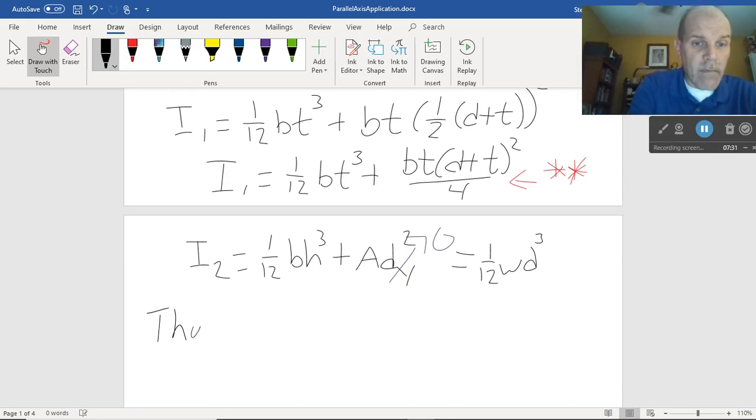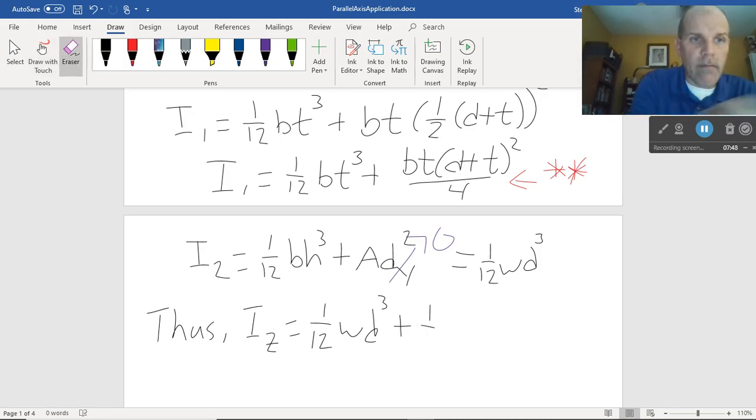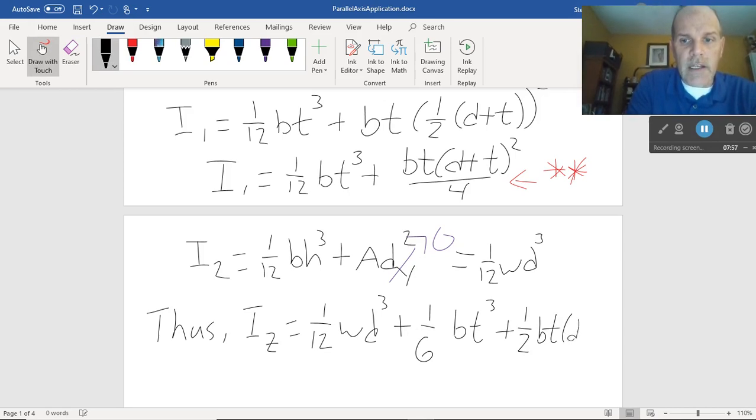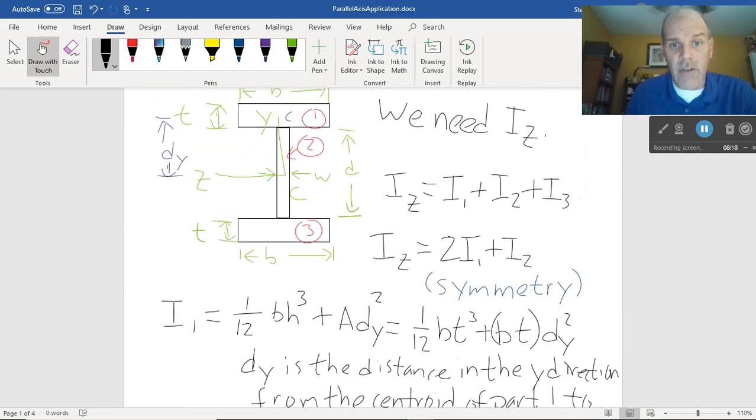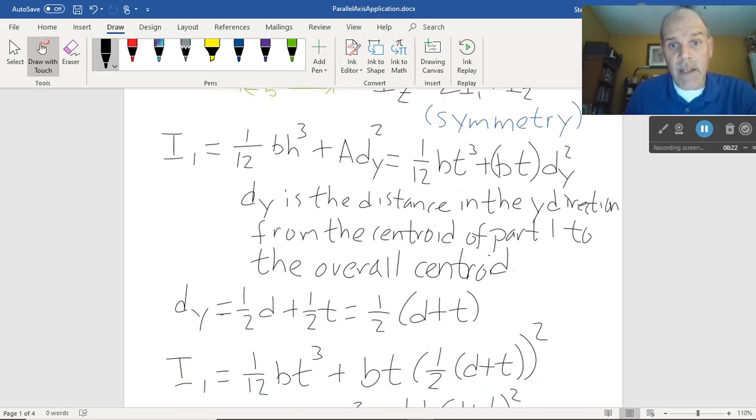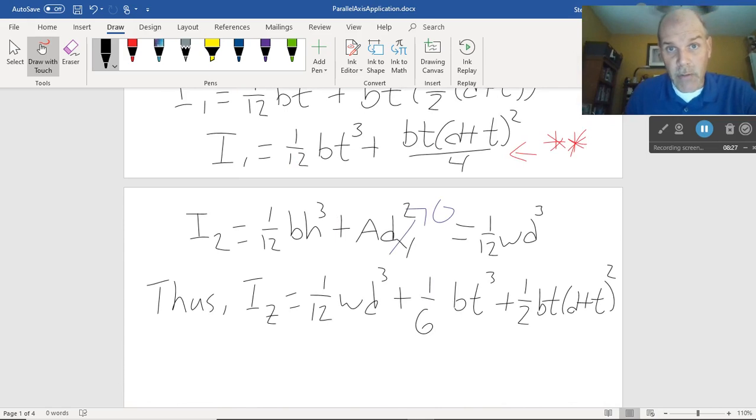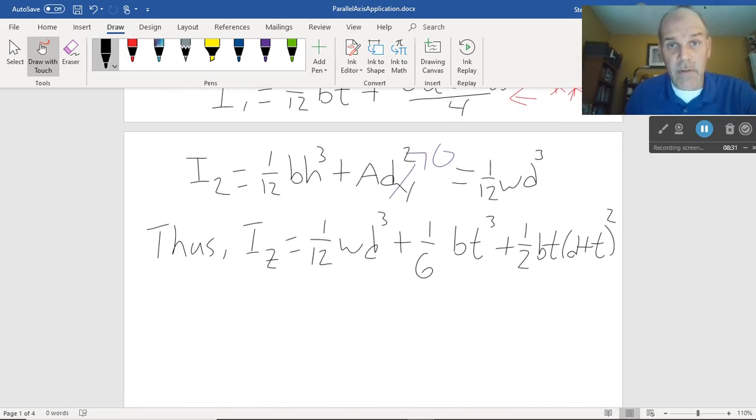And there we are. So, overall, we could say Iz is equal to 1/12 wd³ plus 2 times I1, which turns into 1/6 bt³ plus 1/2 bt quantity d plus t squared. Is it a little more complicated than adding up all the 1/12 bh³s? Well, yeah, there's a little more going on, but it's not much, and it's really not hard to put into place. Once you keep in mind that you just need to add in this parallel axis part, this a d², technically appears on all three of these. We only do it once, because 1 and 3 have the same moment of inertia, and because the distance we move number 2 is 0.